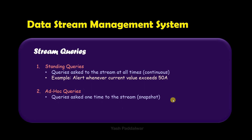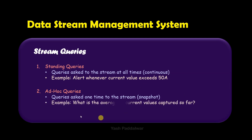The next type of query is ad hoc queries, also known as snapshot queries. These are queries asked a single time to the stream, generating a single output. This is similar to a database management system where you ask a query once and the system returns one single output — that is how ad hoc queries work in DSMS.